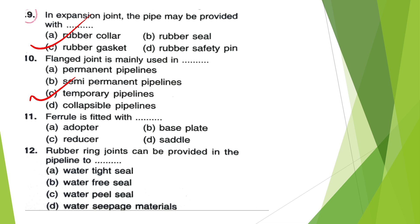11th question: Ferrule is fitted with — Adaptor, Base Plate, Reducer, or Saddle? The answer is option D — Saddle.